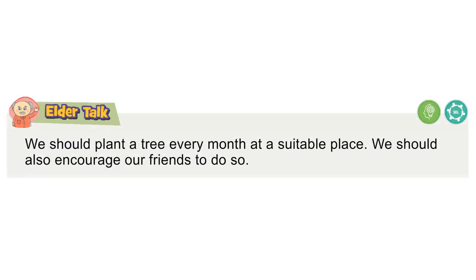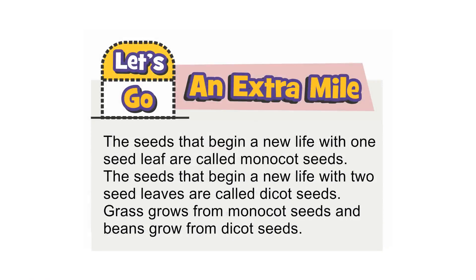We should plant a tree every month at a suitable place and encourage our friends to do so. Seeds that begin a new life with one seed leaf are called monocot seeds, while seeds that begin a new life with two seed leaves are called dicot seeds. Grass grows from monocot seeds and beans grow from dicot seeds.